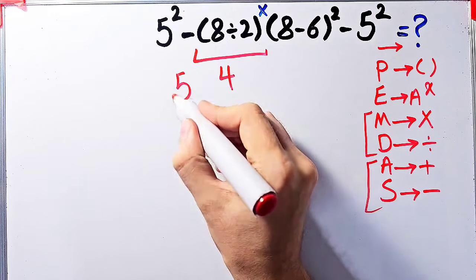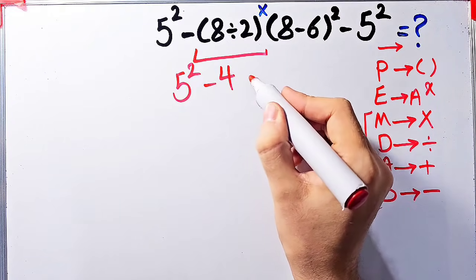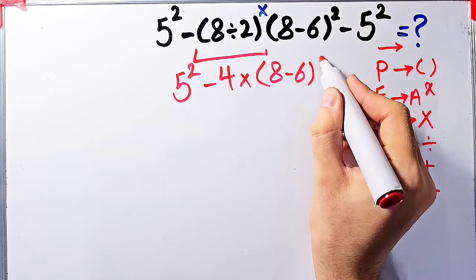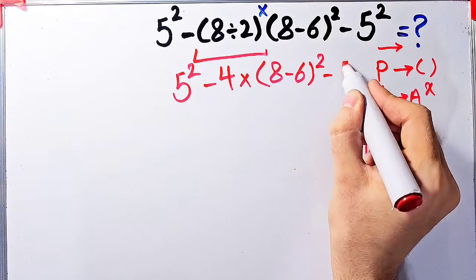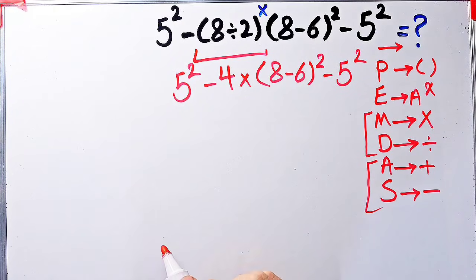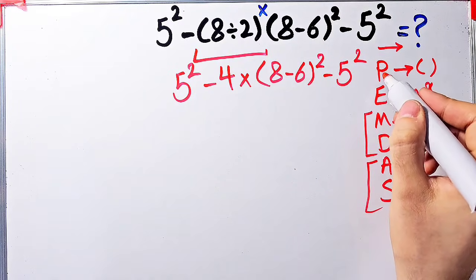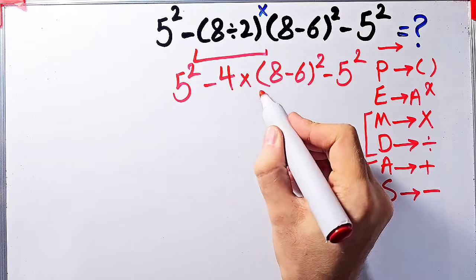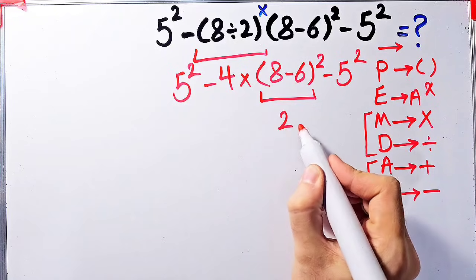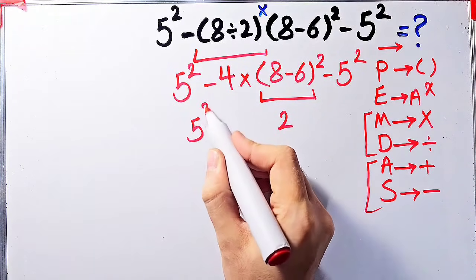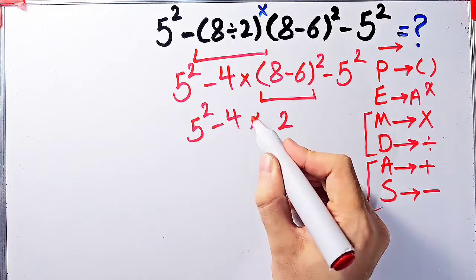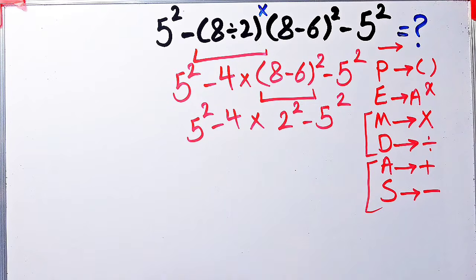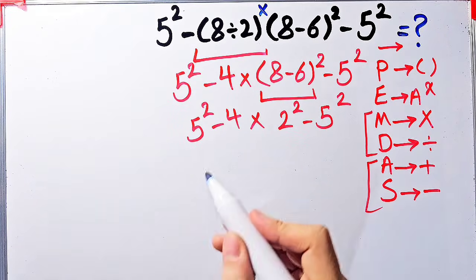Now the question is five to the power of two, minus four, times open parenthesis eight minus six, close parenthesis, then all of them to the power of two, minus five to the power of two. Again we simplify the parenthesis: eight minus six equals two. Now the question is five to the power of two, minus four, then times two to the power of two, minus five to the power of two. In this step we simplify the exponents.